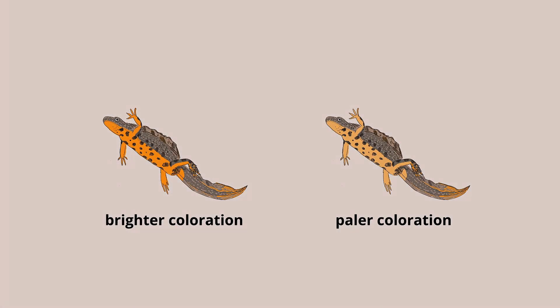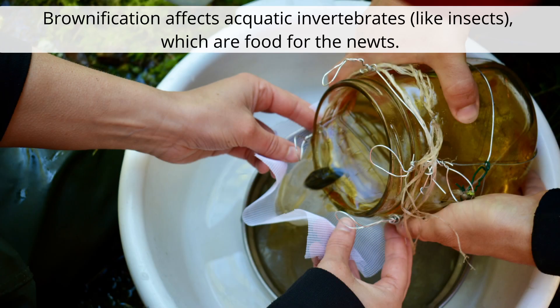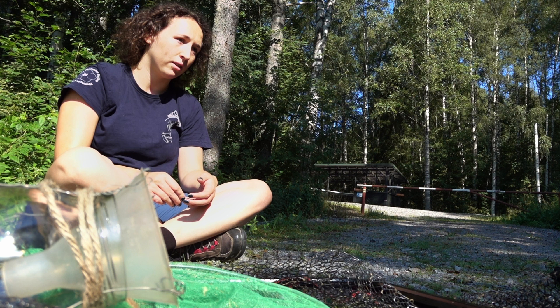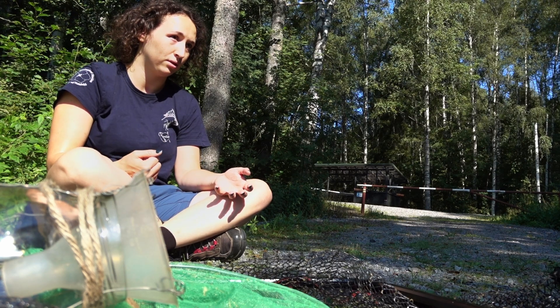Will they still display this bright pigmentation in brown waters? Will they still allocate this energy to give a colour pattern even brighter in brown water so that they can be seen better, or will they do the opposite? We had a decline of macroinvertebrates in some lakes along the years and it was linked with water brownification, and we know that amphibians — the newts for example — feed on invertebrates, so if you have a decline in invertebrates it could cascade to the newts.